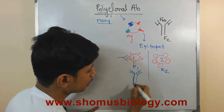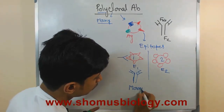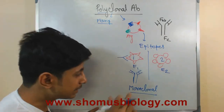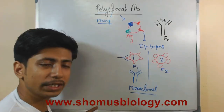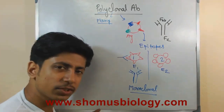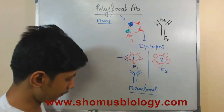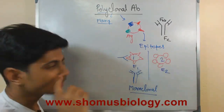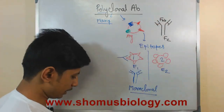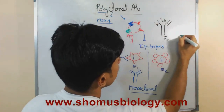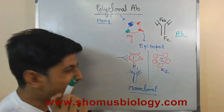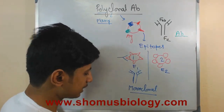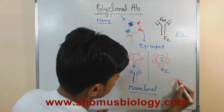This is called a monoclonal antibody because it has a single epitope to bind. For that reason, monoclonal antibodies are extremely, highly specific — though the affinity could differ. On the other hand, if I design another antibody, this antibody can pair with both types of epitopes.